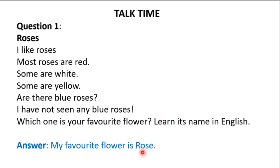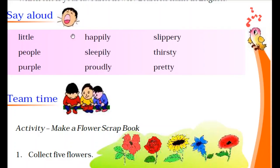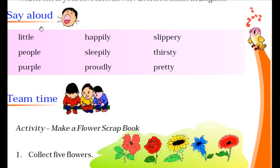The next topic is Say Aloud — you have to read these words aloud. The words are: little, people, purple, happily, sleepily, proudly, slippery, thirsty, pretty. Read these again and again so that your reading improves.